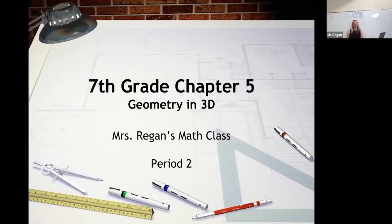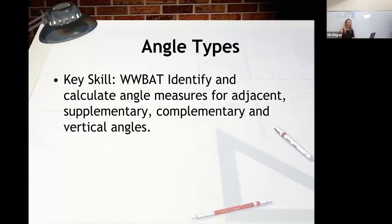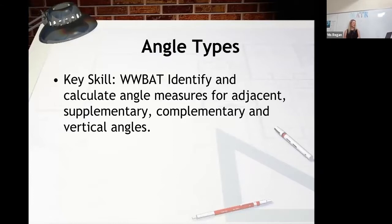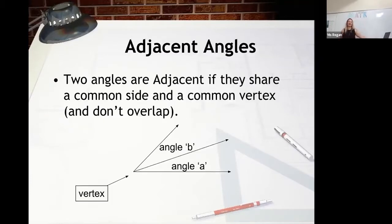Then we'll do a fun math activity. Alright, let's get going. Our key skills for today are to identify and calculate angle measures for adjacent, supplementary, complementary, and vertical angles. Let's take a look at our first angle — adjacent angles. Two angles are adjacent if they share a common side and a common vertex.